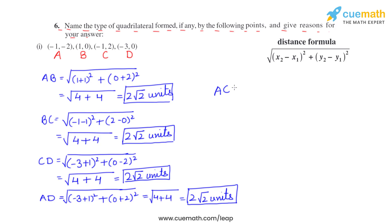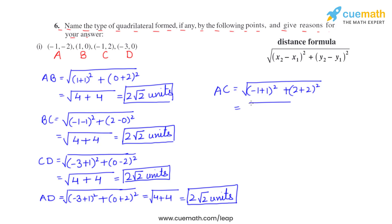Let's find diagonal AC: (−1 minus −1) whole square plus (2 minus −2) whole square = 0 + (4)² = 0 + 16 = 16. So AC = square root of 16 = 4 units.